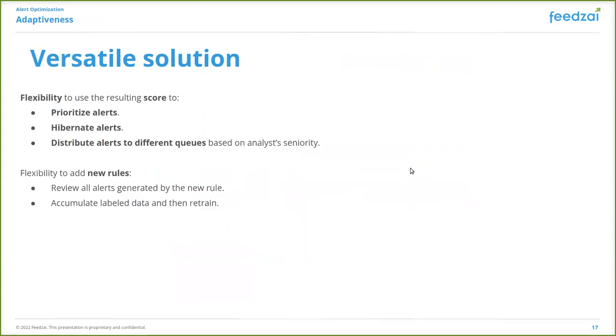Moreover, our solution is versatile because the result is a score, which provides us the flexibility to either use this score to prioritize alerts or to hibernate false positives, or to organize alerts in different queues based on the seniority of the analysts reviewing them. Also, it allows adding new rules to the rules system, where we propose that all the alerts generated by the new rules will be reviewed until we accumulate enough data to retrain our model.